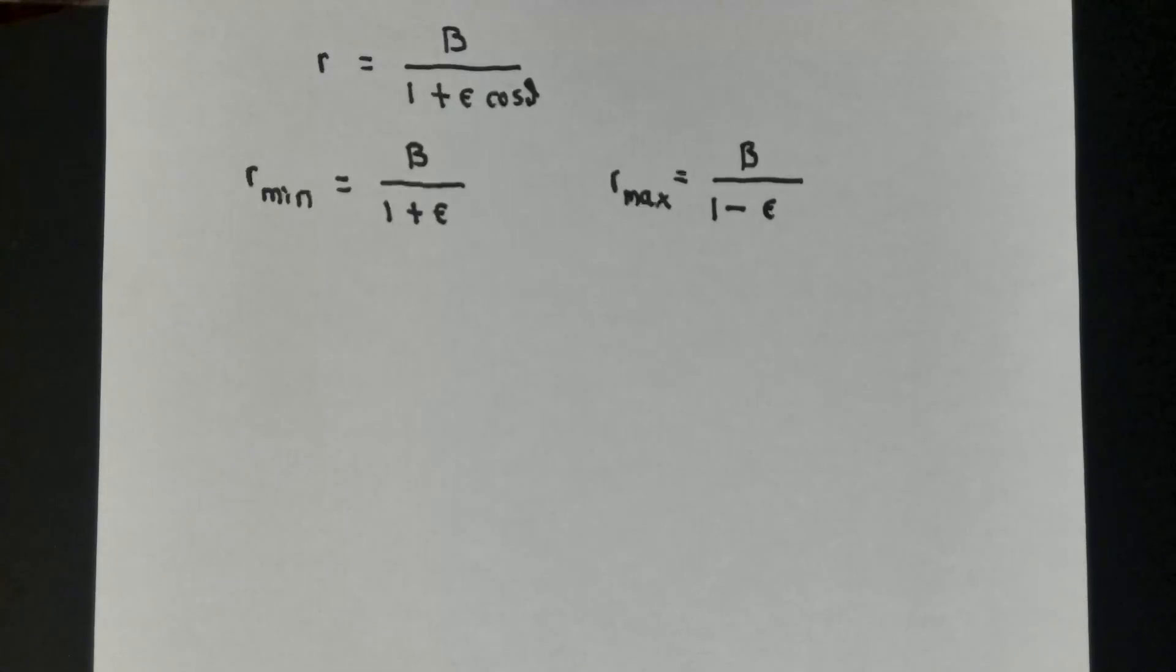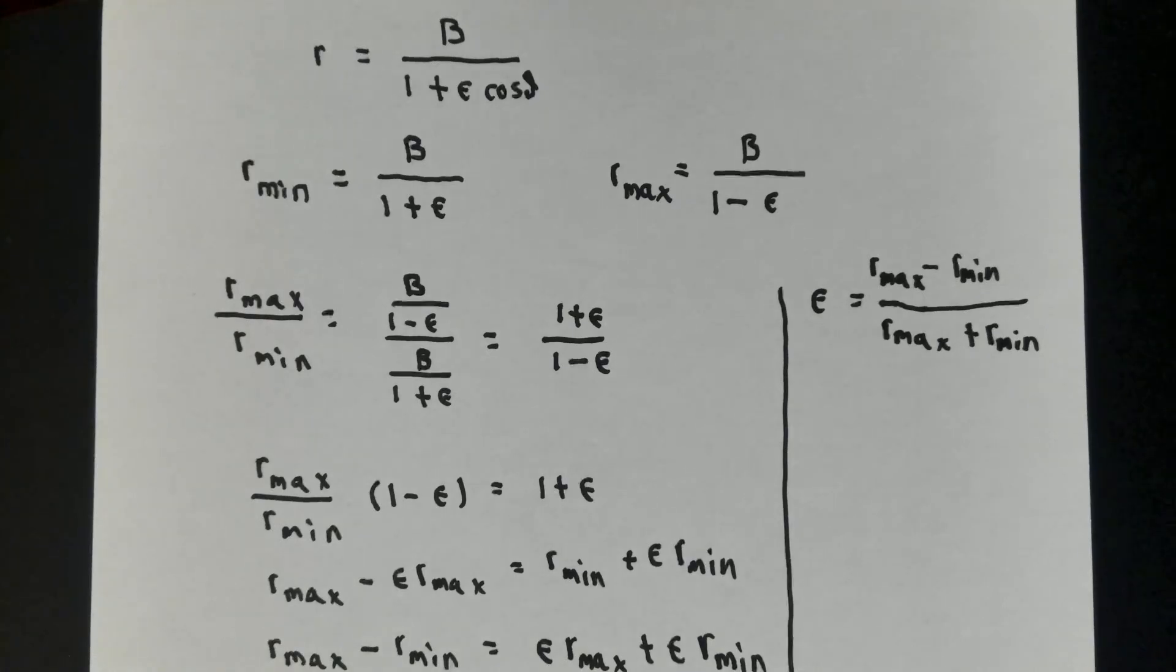On the other hand, if I want to make r as big as possible, I want to make 1 plus epsilon cosine theta as small as possible. The smallest the cosine ever gets is negative 1, which happens when theta is equal to pi. So the maximum r value is that same constant b divided by 1 minus epsilon. Take the ratio r max over r min. The b's cancel out, giving you 1 plus epsilon over 1 minus epsilon.